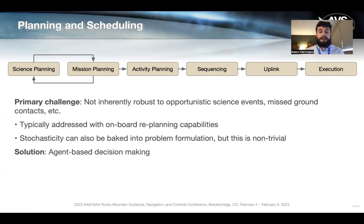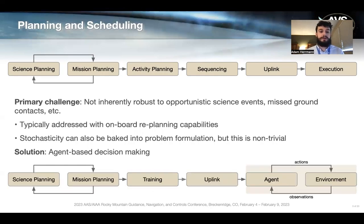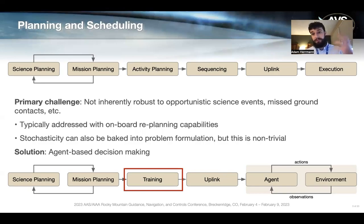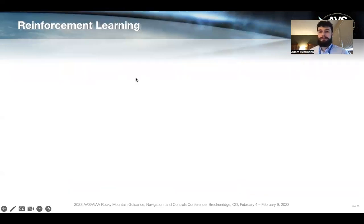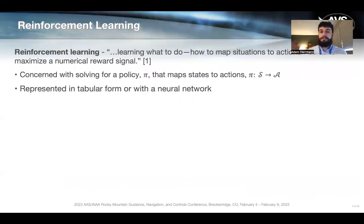Agent-based decision-making can inherently address some of these issues. It looks largely the same as traditional planning with a few modifications — you might replace your activity planning block with a training block, uplink your policy to the spacecraft, and then that policy is executed closed loop based on observations from the environment. The most popular approach would be reinforcement learning, which is basically just learning how to map states to actions to maximize some numerical reward signal. What we're solving for is some policy π that maps states to actions, which can be represented in tabular form but most popularly with a neural network.